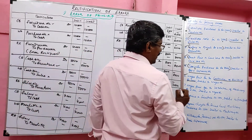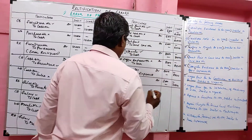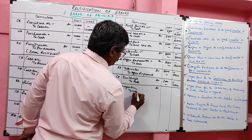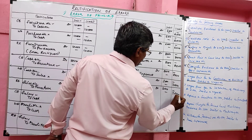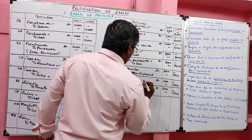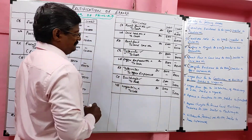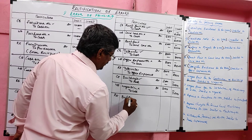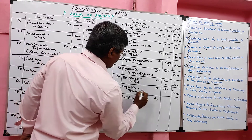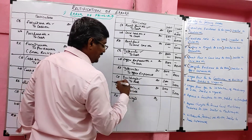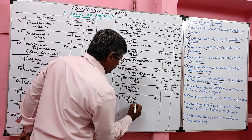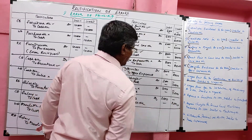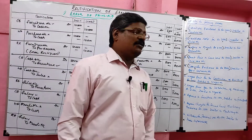Building should be debited; wages should be removed. Rectified entry: building account debit to wages account, 3,000. The wages was on the debit side, so for cancellation it goes to the credit side. Narration: error rectified. This is the rectified entry.